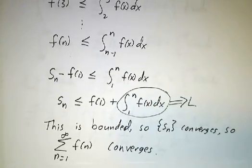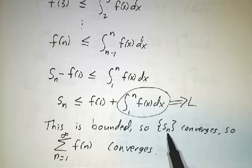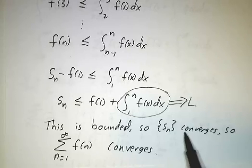And that means that the sns form a bounded sequence. It's a monotonic sequence because each sn is bigger or equal to the previous one. So since it's a bounded monotonic sequence, it's got to converge.